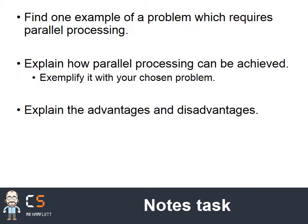Good time to pause and make notes on that, as it's the more complex version. Find one example of a problem which requires parallel processing — those 12 examples from the previous slide, or pick your own — then explain how parallel processing can be achieved. This was actually used as an exam question before, looking at film processing and special effects. Explain how parallel processing can be achieved, exemplify it with your chosen problem, and get the advantages and disadvantages in there.